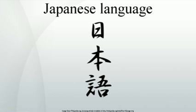Japanese is a member of the Japonic languages family, which also includes the languages spoken throughout the Ryukyuan Islands. As these closely related languages are commonly treated as dialects of the same language, Japanese is often called a language isolate. Japanese has been subject to more attempts to show its relation to other languages than any other language in the world. Attempts have been made to show its genealogical relation to languages or language families such as Ainu, Korean, Chinese, Tibeto-Burman, Ural-Altaic, Altaic, Uralic, Mon-Khmer, Malayo-Polynesian, and Ryukyuan.